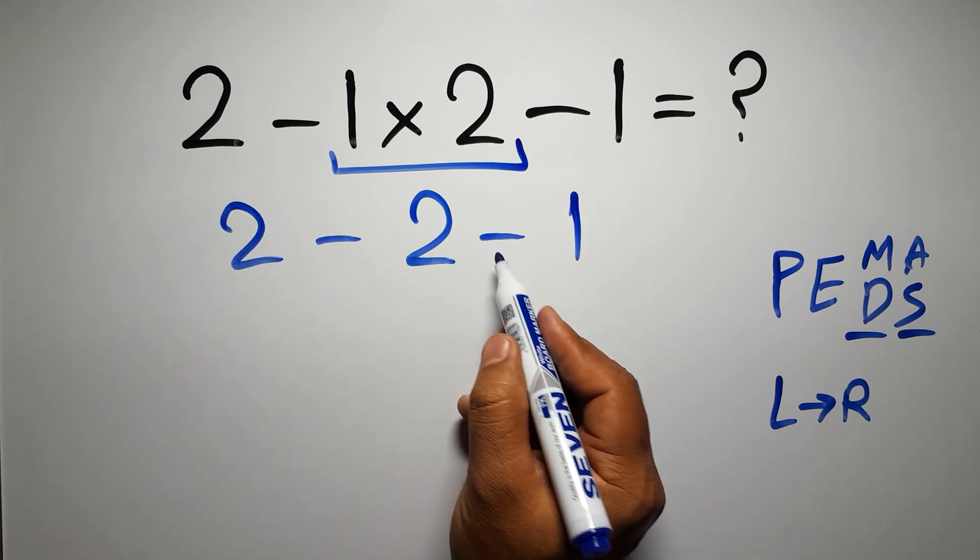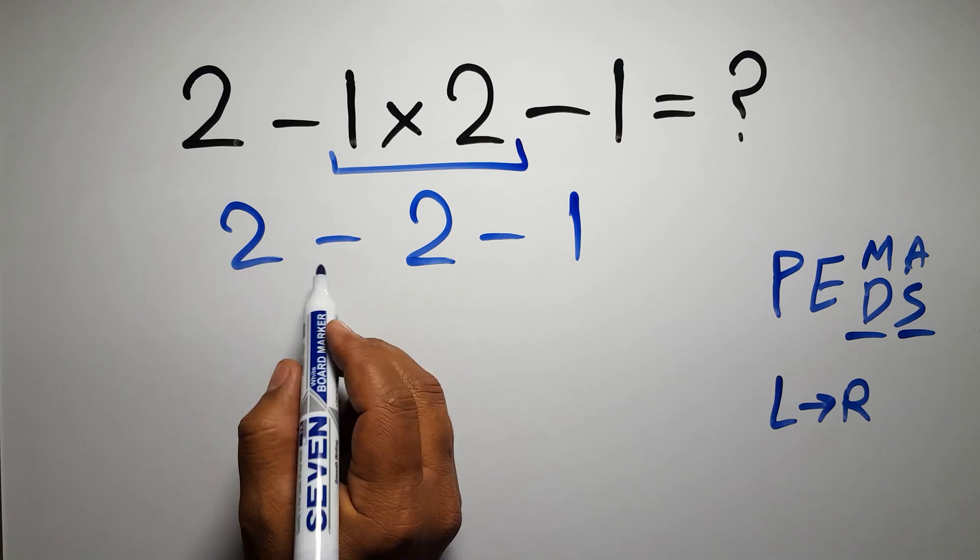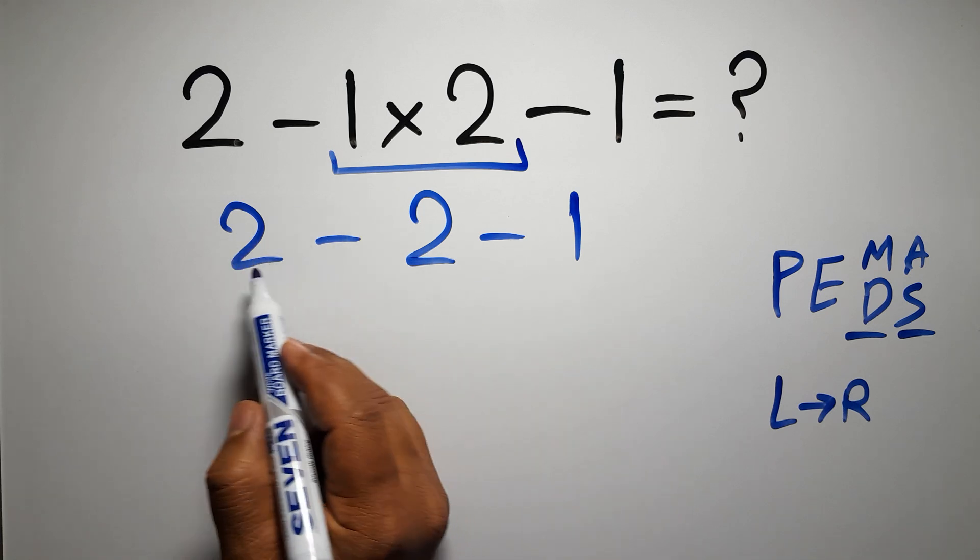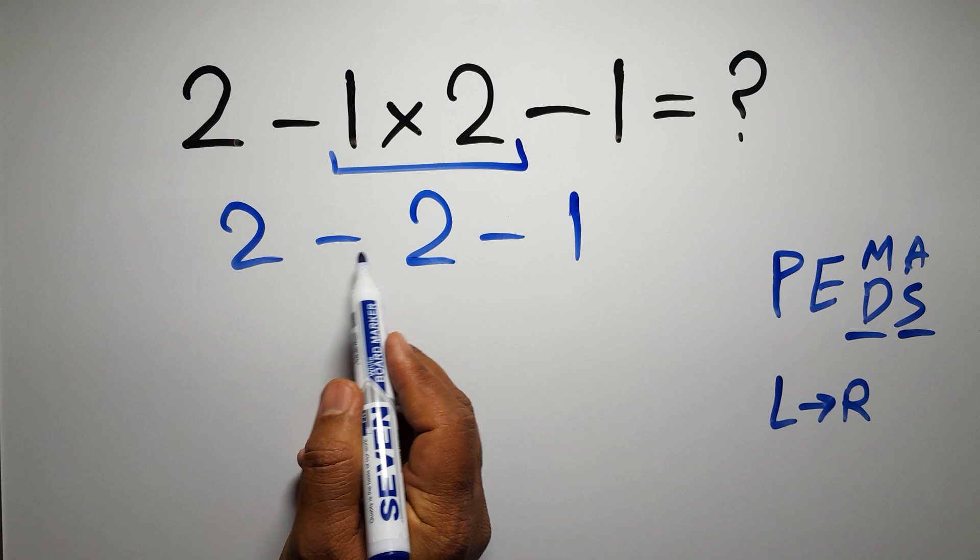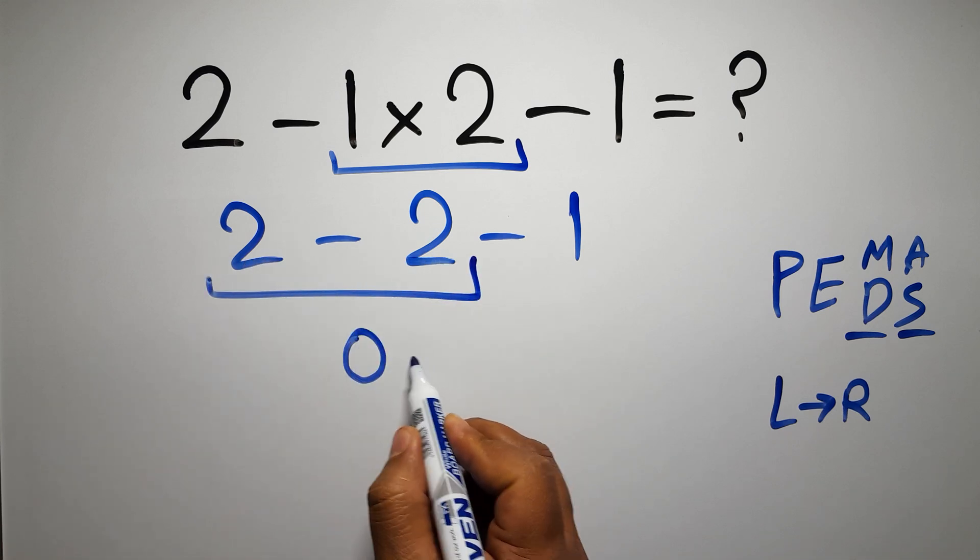Now we have 2 subtractions. When we have more than 1 subtraction in an expression, we have to work from left to right. So here, first we have to do this subtraction, 2 minus 2 gives us 0. So 0 minus 1, which equals negative 1.